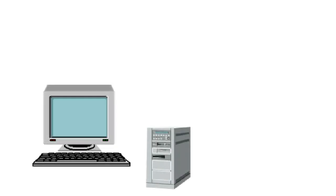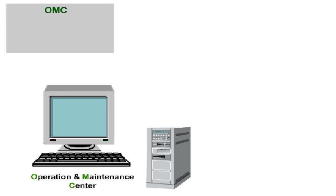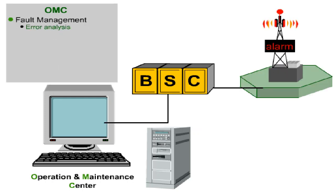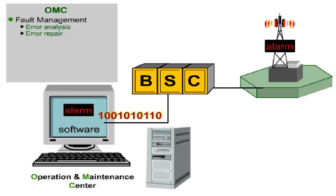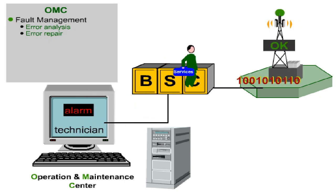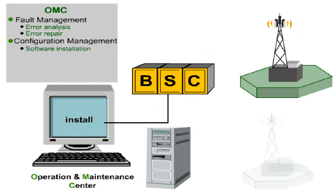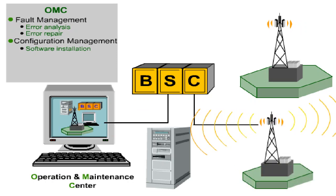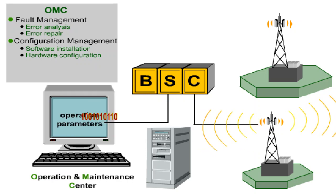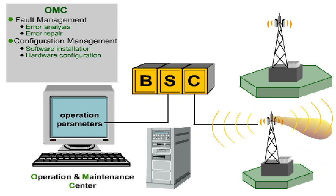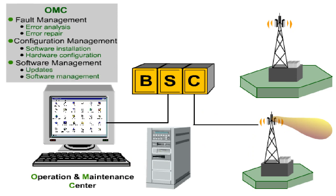The GSM network is monitored and controlled from a central point — the Operation and Maintenance Centre, OMC. The fault management system analyzes alarms from the BSS elements; when faults occur, they are eliminated via software command or in-situ by technicians. The configuration management function installs software when new BSS network elements are implemented, manages hardware inventory lists, and changes operation parameters, for example, radio frequencies of a BTS. The software management system feeds in new software or updates and manages the software inventory lists.